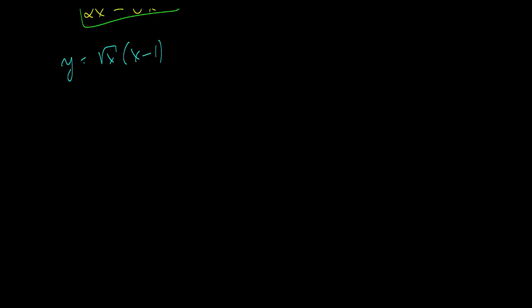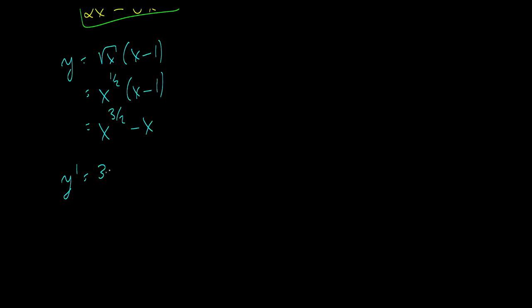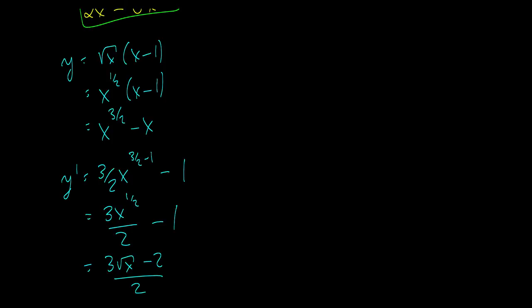Let's do one more example with fractional powers. We have y equal to the square root of x times (x minus 1). The square root of x is x to the 1/2, so distributing gives x to the 3/2 minus x. Taking the derivative: y prime equals 3/2 times x to the 3/2 minus 1, minus 1, which is 3x to the 1/2 over 2 minus 1. You can also write this as (3 root x minus 2) over 2, though either form is fine.